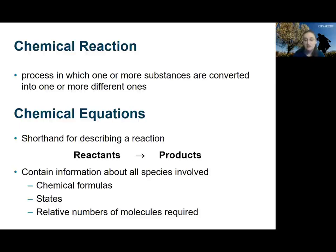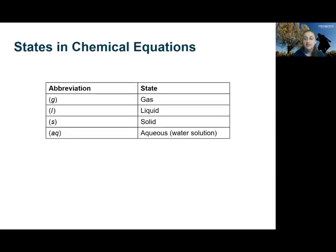Chemical equations are shorthand for describing reactions and always show the starting substances or reactants on the left and ending substances or products on the right. Chemical equations show the chemical formula, the state of matter, and the relative numbers of molecules required to complete the reaction. We've already seen molecular and empirical formulas used for representing chemical substances, but before we look at full chemical equations we also need to be familiar with the abbreviations used for the different states of matter.